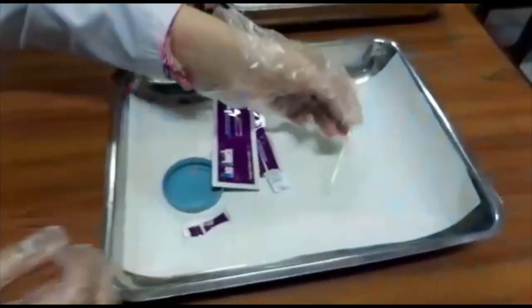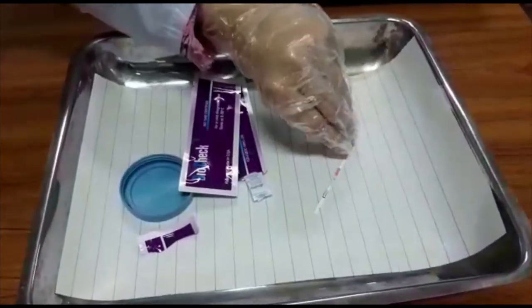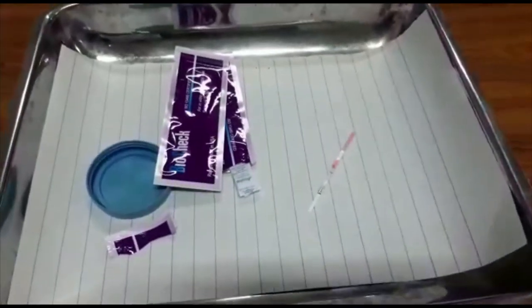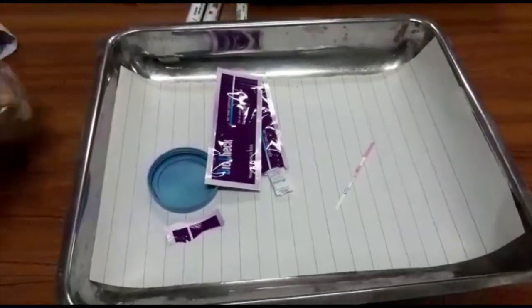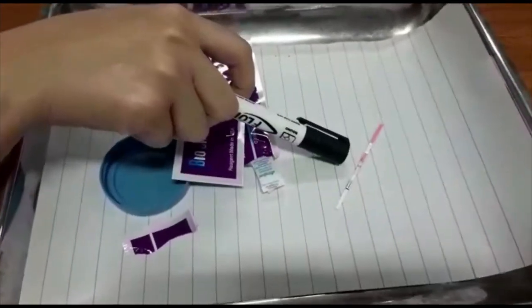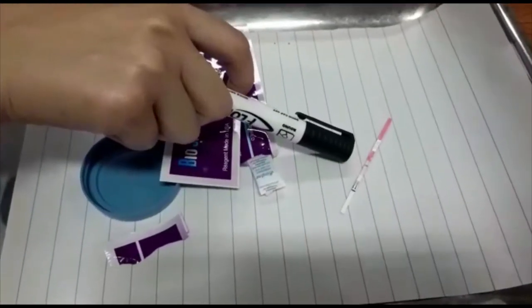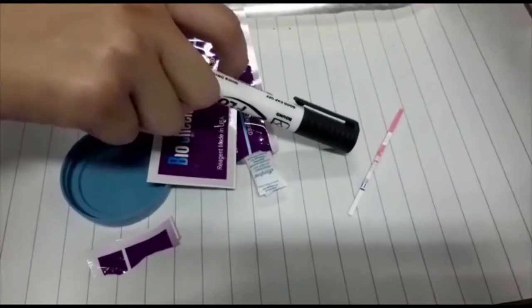Place it on a clean, non-absorbent surface, looking for the control line to appear. As you can see here, a control line in the control zone has appeared which shows that the test has been performed successfully.